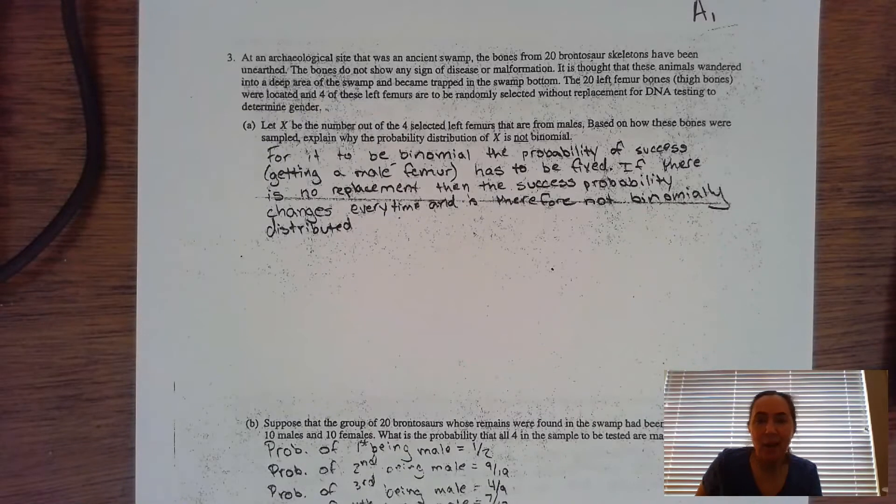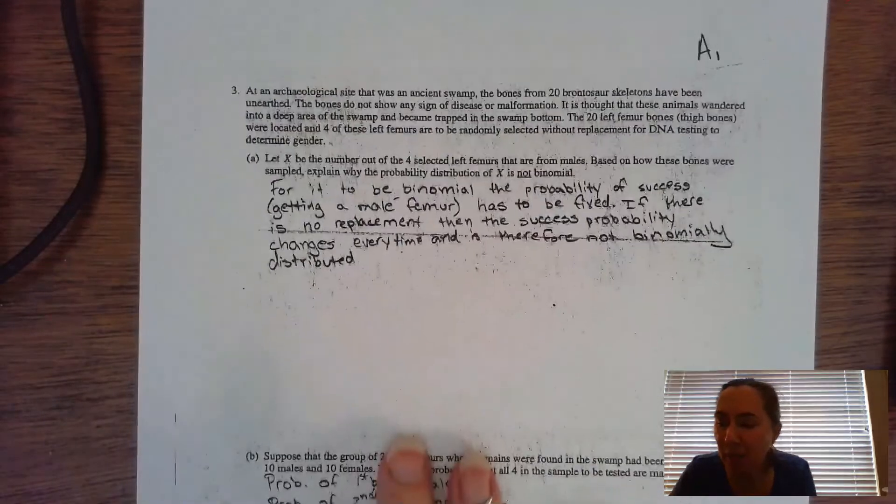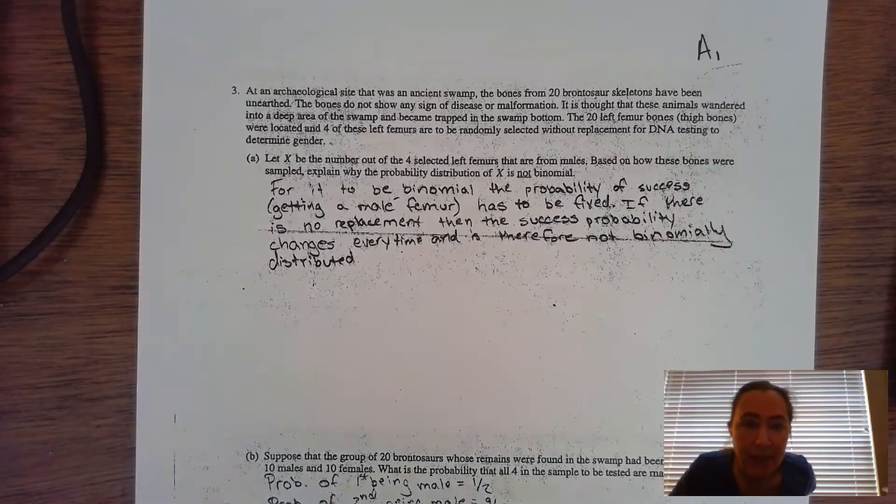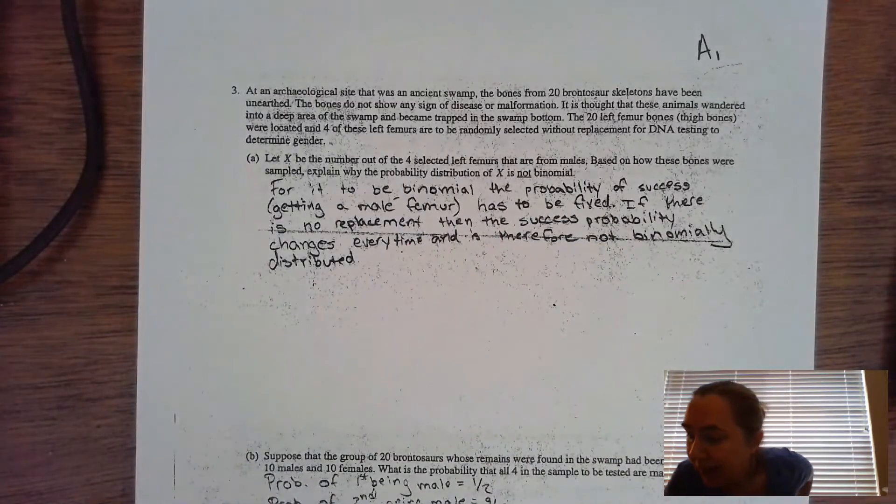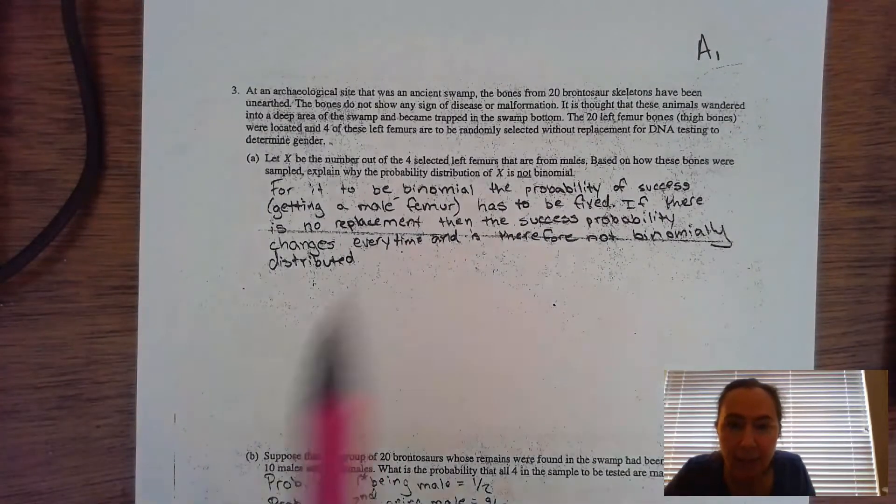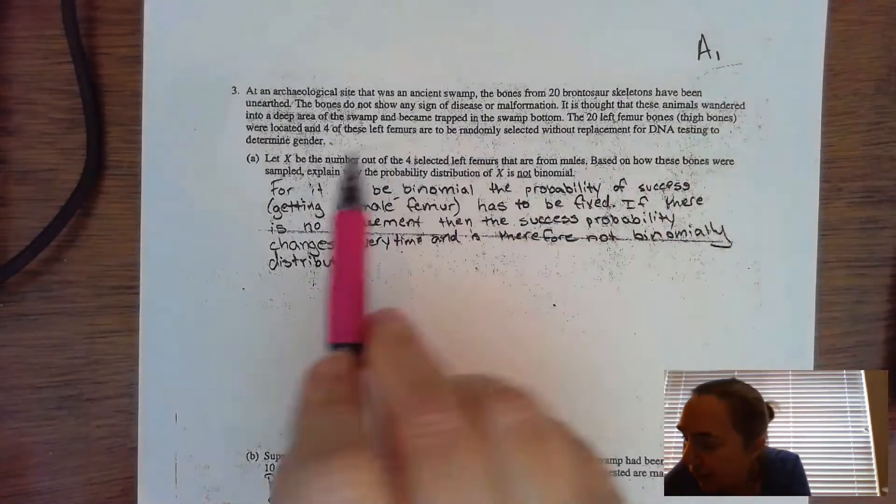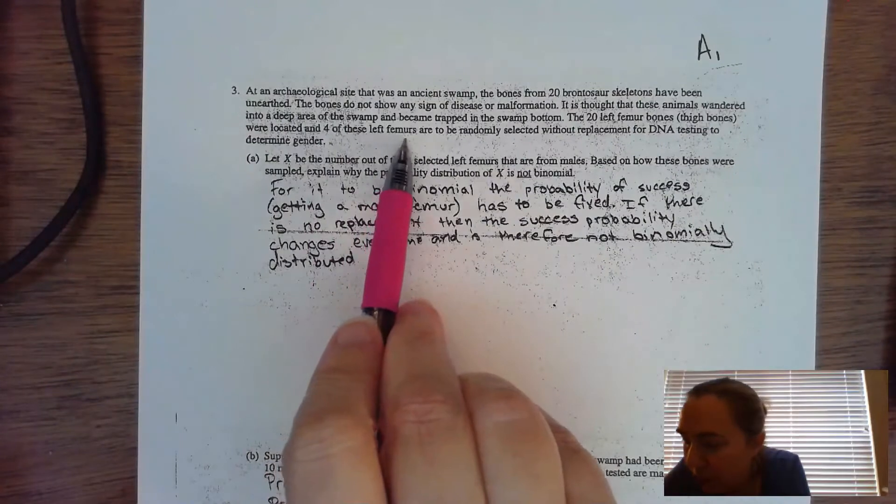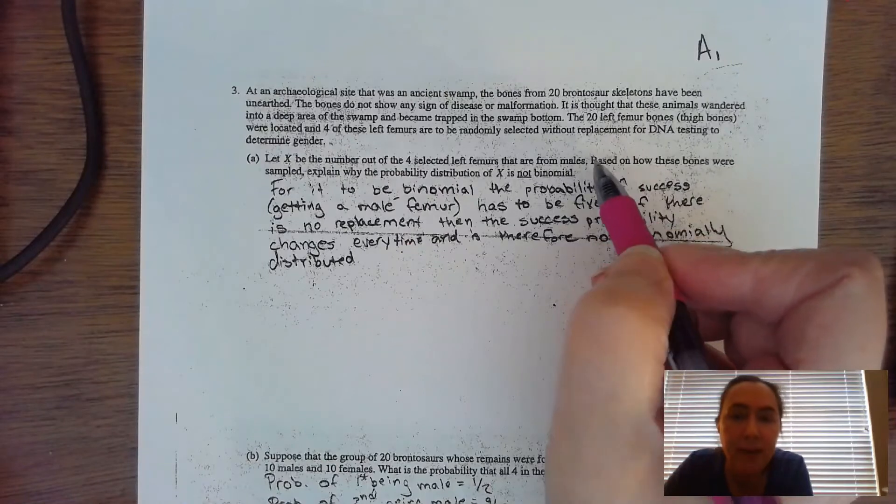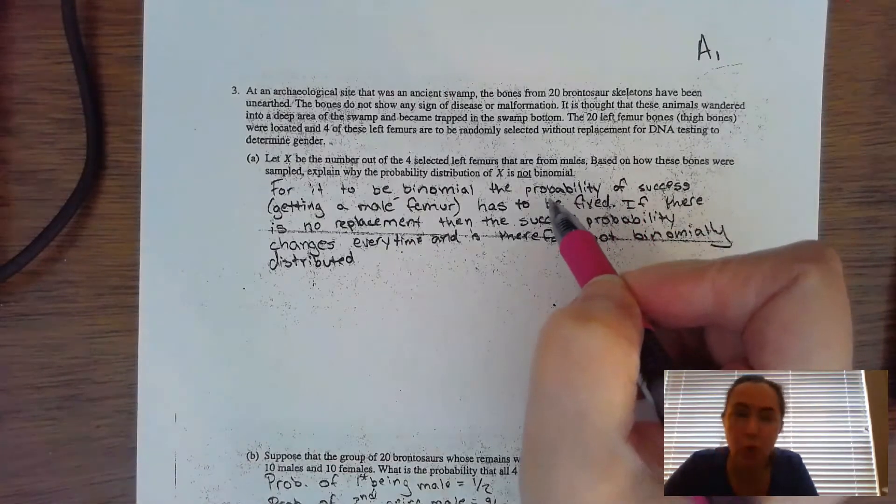Hi friends. We're going to take a look at the FRQ grading from the 2004 AP Stats exam. This is problem number three, the famous dinosaur bone problem. In this particular problem, they tell you about an archaeological site and some background information. You can see they are selecting femurs that will be randomly selected without replacement, and we know there are 20 femurs within that particular swamp.